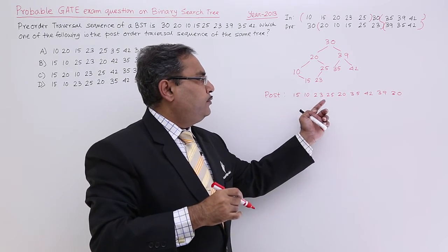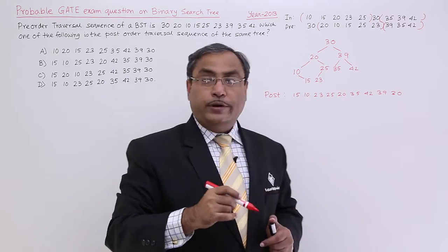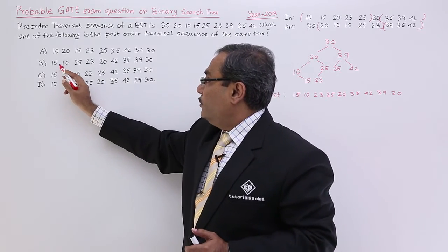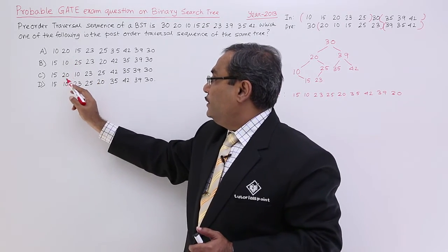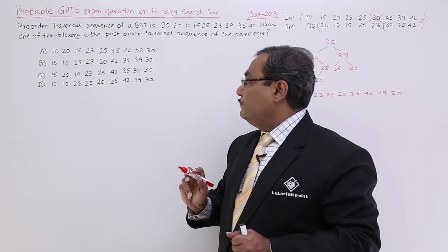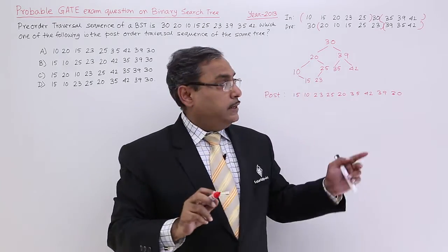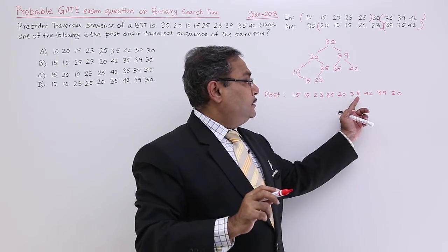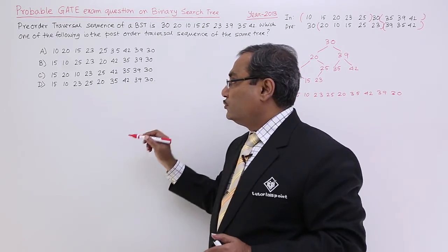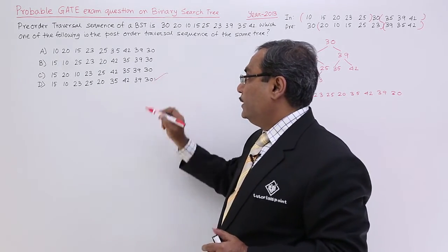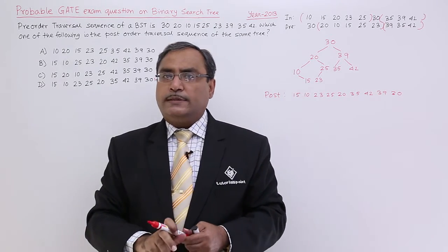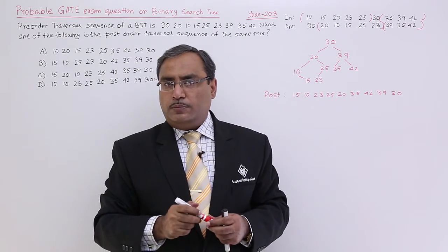The post-order traversal gives: 15, 10, 23, 25, 20 — which matches the left subtree portion — then 35, 40, 39, 30 for the right subtree portion. So 15, 10, 23, 25, 20, 35, 40, 39, 30 is matching with option D. So I will be going for option number D. In this way, this sort of problem can easily be solved.